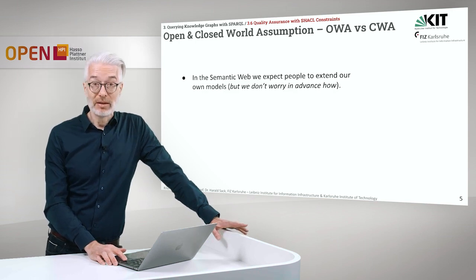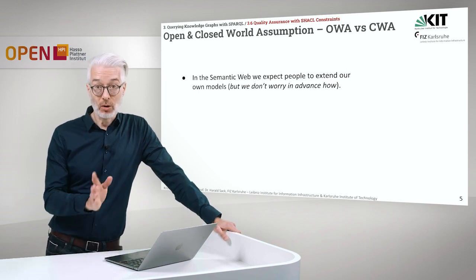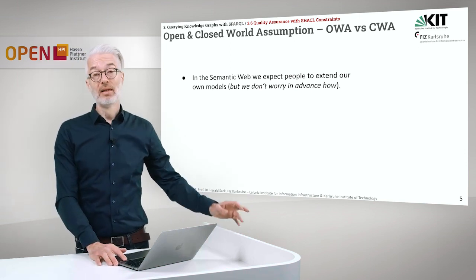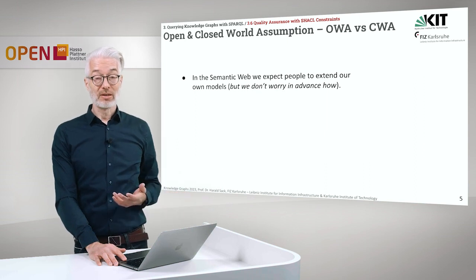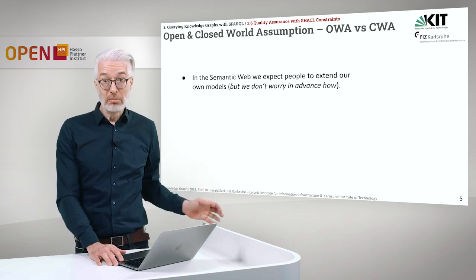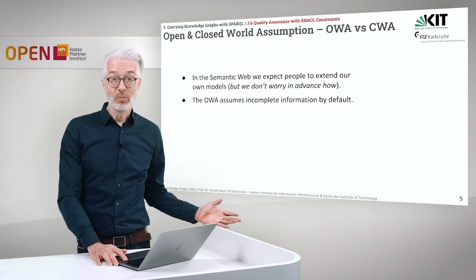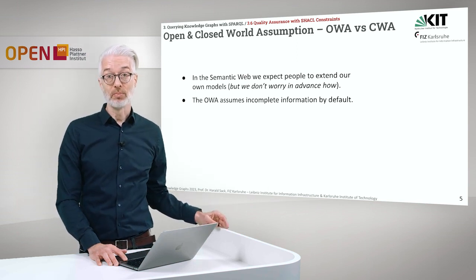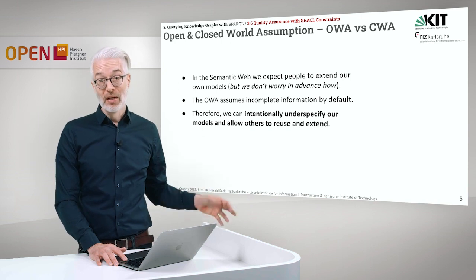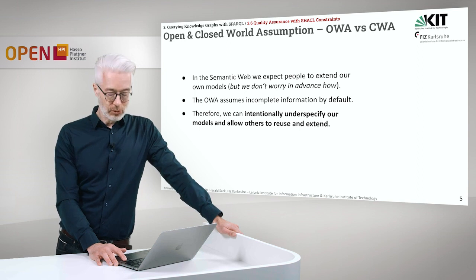In the Semantic Web, we expect people to extend our own models that we have created. We don't worry in advance that everything is complete. We simply design our structures, our knowledge representation, according to our needs. And in case somebody else is reusing it, he or she is simply extending it according to their own needs. So it is open. The open world assumption assumes incomplete information by default. We can intentionally underspecify our models and allow others to reuse and extend.